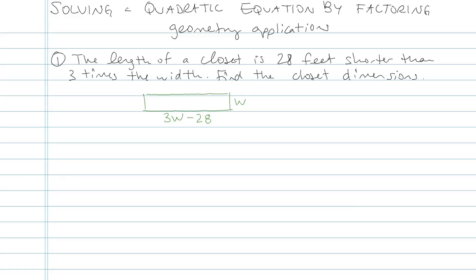The thing that I was subtracting twenty-eight from is three times the width. So again, the length of the closet is twenty-eight feet shorter, so there is the minus twenty-eight, than three times the width. That's how I set this guy up. Find the closet dimensions. Well, the thing they forgot to tell us is that the area is equal to twenty.